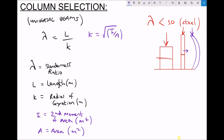At that point, we no longer just have direct loading — we also have bending. The force is offset at a distance, so the column is not only in compression but also subjected to bending. The way we determine whether a column is under direct loading or bending is using a property called the slenderness ratio, represented by the Greek letter lambda. Slenderness ratio equals the length of the beam divided by a parameter called the radius of gyration.